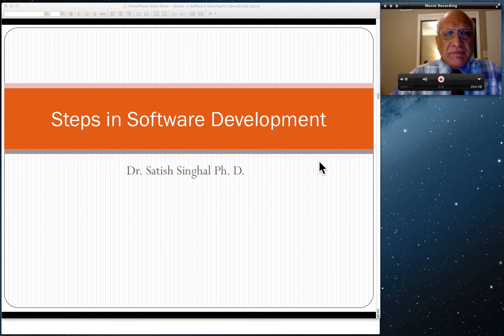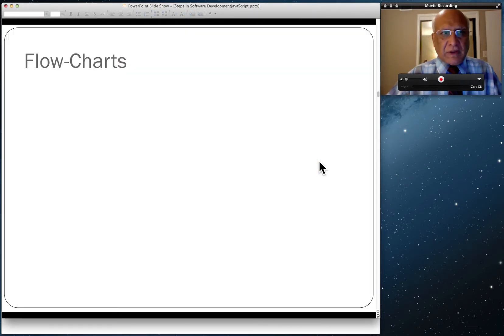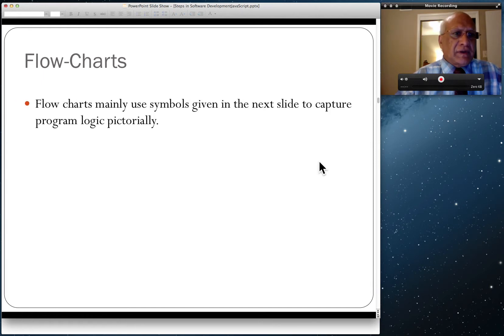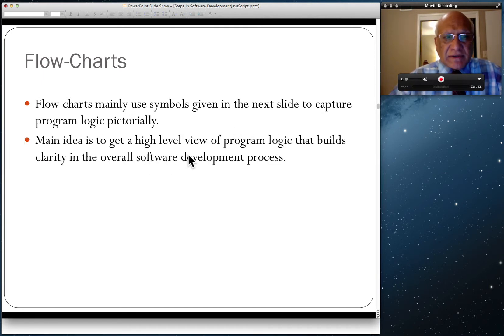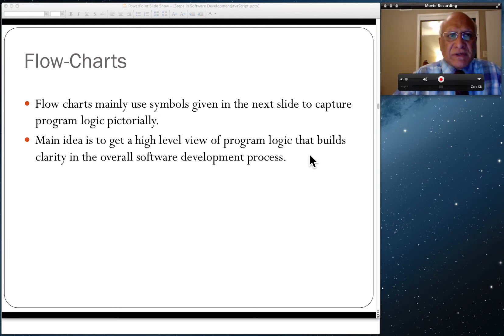Flowcharts mainly use symbols given in the next slide to capture program logic pictorially, and they're quite useful for small parts. The main idea of flowcharts is to get a high-level view of program logic that builds clarity in the overall software development process. Using flowcharts you can clarify your logic to a lot of people. They say one picture is worth a thousand words, and that's true about flowcharts.